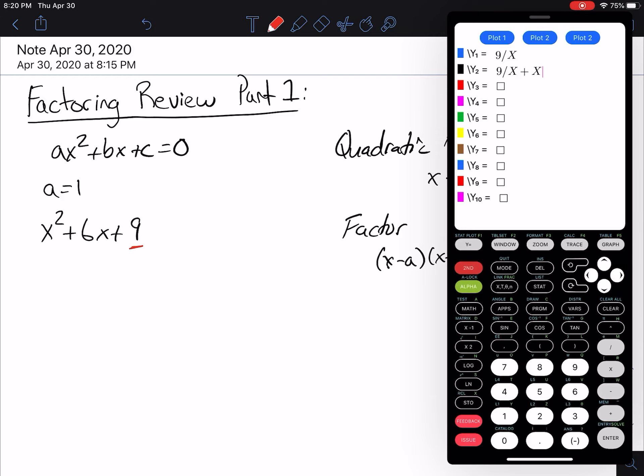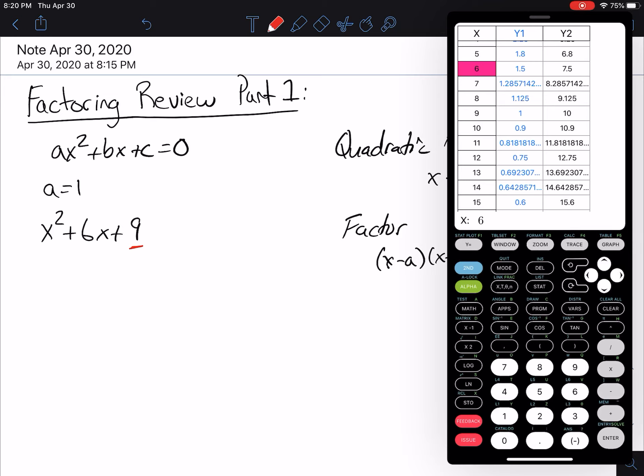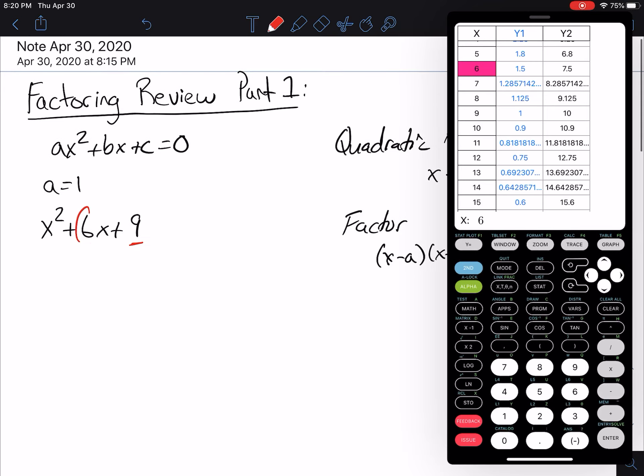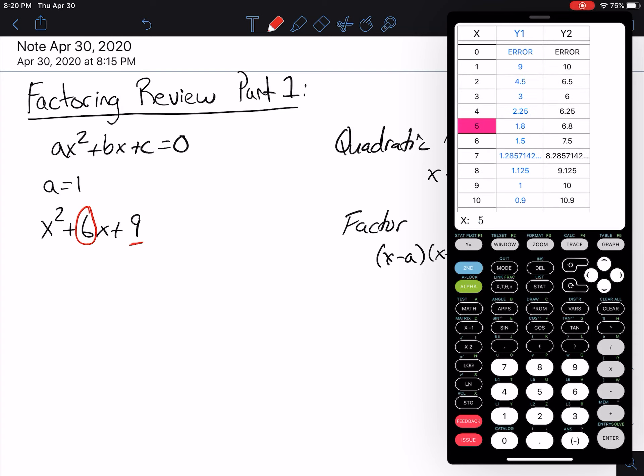And then we don't care about the graph, we're looking at second table. And remember, we're looking for the middle number now to be 6. So we need to find where the middle number is 6. And we'll see here that the middle number is 6 in the third column when we have 3 and 3. That means that when we factor, we get x plus 3, x plus 3, and that's how we leave it.